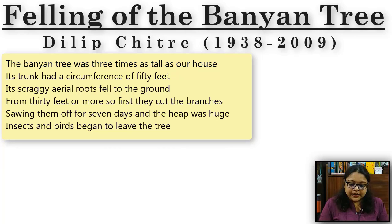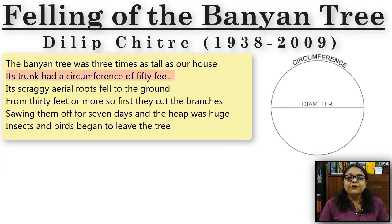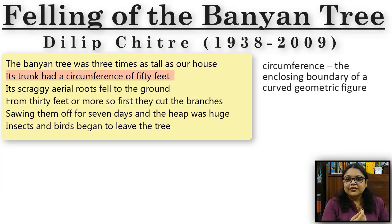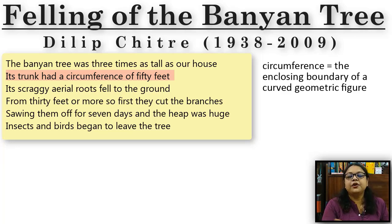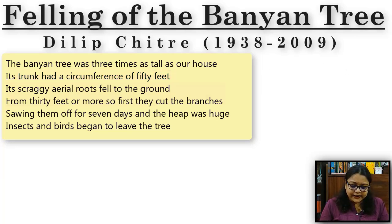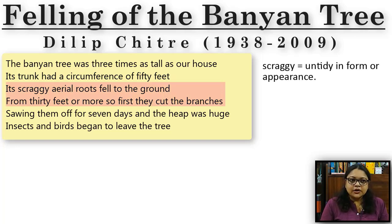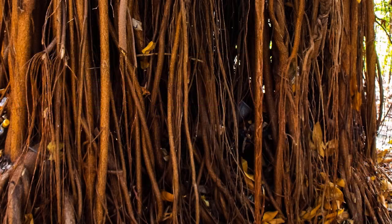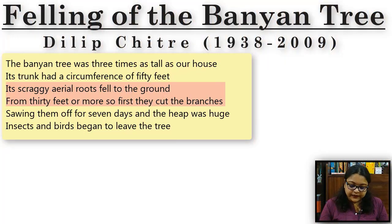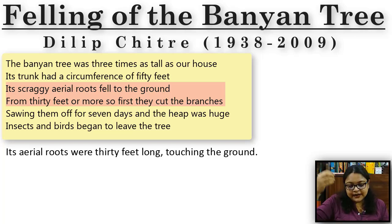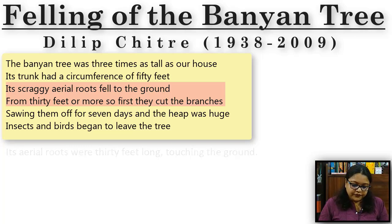The poet describes the banyan tree: its trunk had a circumference of 50 feet. Circumference is the total length around the tree's trunk — if you put a tape around it, that was like 50 feet, so it was a huge tree. Its scraggly aerial roots — scraggly means not ordered or cut into any proper shape — fell to the ground from 30 feet or more. Its circumference was 50 feet and the length of the hanging roots was 30 feet.